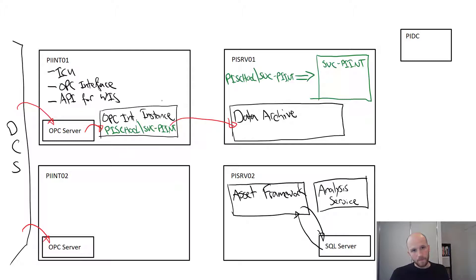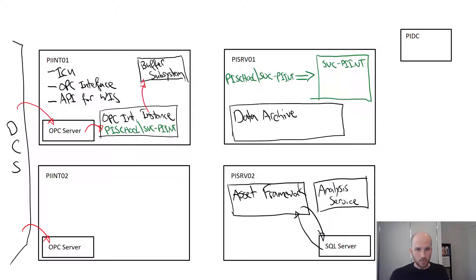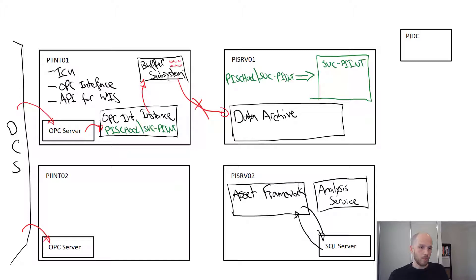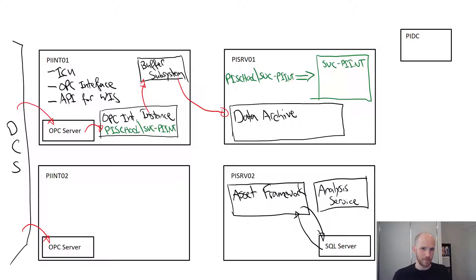A final step is to enable buffering on the interface. This will make the interface resistant to interruptions between it and the data archive — it'll buffer data during a network outage, and when the network comes back it'll flow right through again. Sounds easy right? Let's do it.